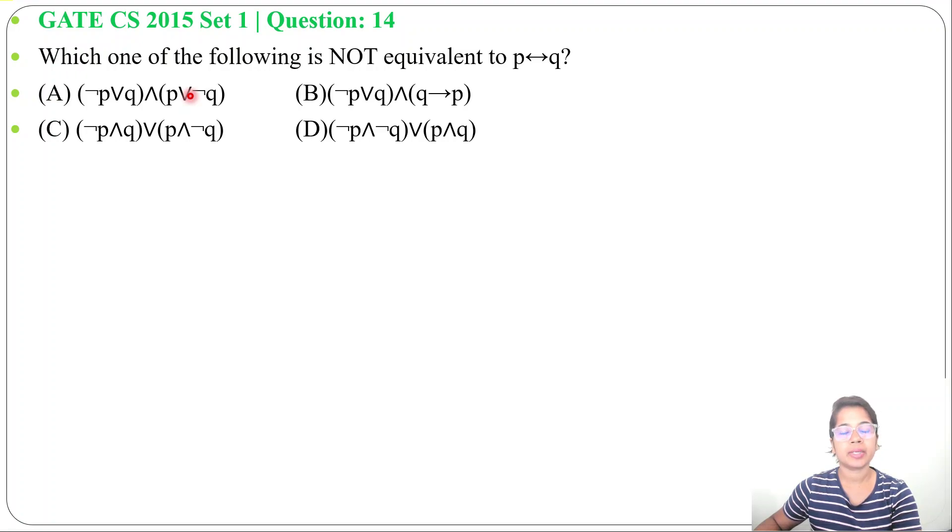Let's solve one previous question of mathematical logic. This question was asked in GATE CS 2015 Set 1, question number 14. Which one of the following is not equivalent to P double implication Q, and four options are given.